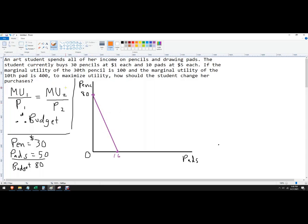Now, marginal utility is the additional utility gained from an additional pencil or additional pads. So there's all these lines. We call them indifference curves.